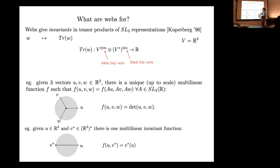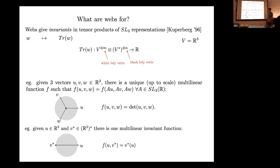That number is supposed to be sl3-invariant. Here's an example: this particular web takes as input three vectors — the boundary vertices are white — so it takes three vectors, one for each boundary vertex, and the web spits out the determinant of those three vectors, that is the determinant of the matrix whose columns are those three vectors in order. It's multilinear, and if you multiply the three vectors on the left by the same matrix in sl3, the determinant doesn't change.